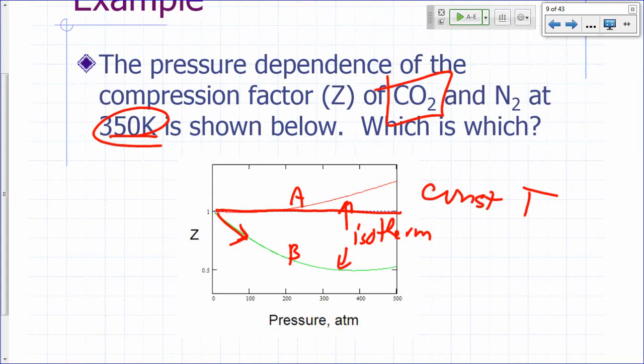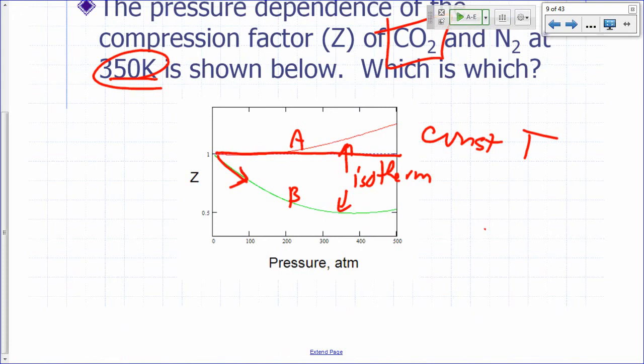Then, you'll have to compare carbon dioxide and nitrogen in terms of intermolecular forces. How do you compare carbon dioxide and nitrogen in terms of intermolecular forces? Remember the Lewis structures for carbon dioxide and nitrogen? This is carbon dioxide and nitrogen. They're both nonpolar.